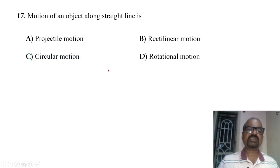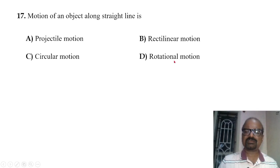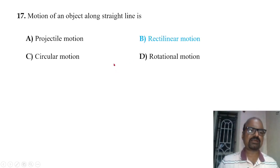Motion of an object along a straight line — this is rectilinear motion, also called straight-line motion. Projectile motion is not rectilinear; circular motion is not rectilinear. Straight-line motion is rectilinear motion.